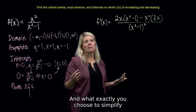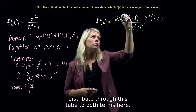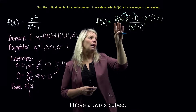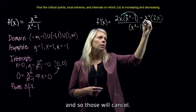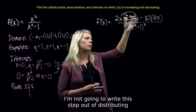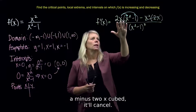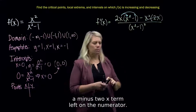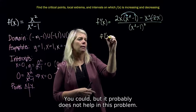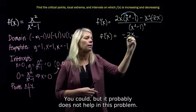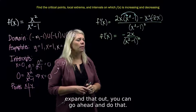What exactly you choose to simplify might depend on what's happening in the problem. What I would notice is that if I distribute through this 2x to both terms, I'll have a 2x cubed, and the last term at the back is a minus 2x cubed — those will cancel. I'll have a minus 2x term left in the numerator. I'm not going to expand out the denominator since it probably does not help in this problem — that's just unnecessary algebra.